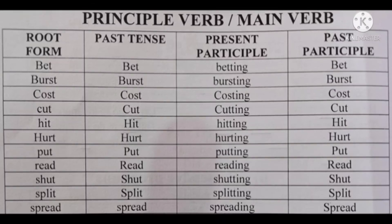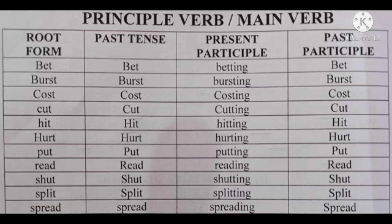More type one verbs: Read — root form: read, past tense: read, past participle: read. Shut — root form: shut, past tense: shut, past participle: shut. Split — root form: split, past tense: split, past participle: split. Spread — root form: spread, past tense: spread, past participle: spread. These are the first type of words where root form, past tense, and past participle remain the same in spellings.